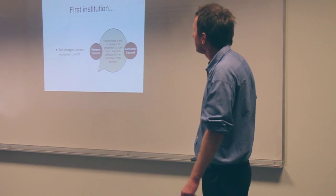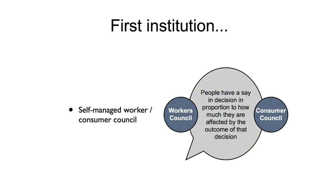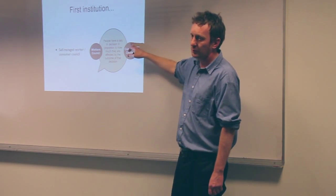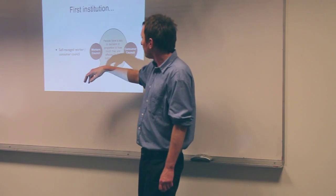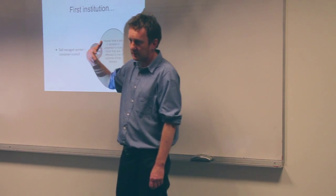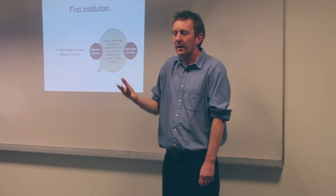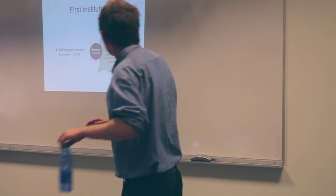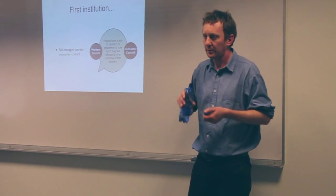The first institution for our vision is self-managed worker and consumer councils — our alternative to private ownership. This is a venue for production and a venue for consumption. Everybody in a participatory economy belongs to both a workers' council and a consumer council. Self-management is a key principle guiding decision-making: people have a say in decisions in proportion to how much they are affected by the outcome of that decision.